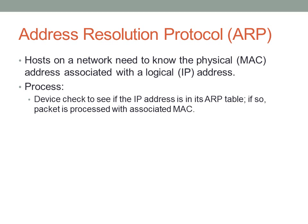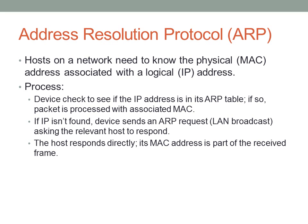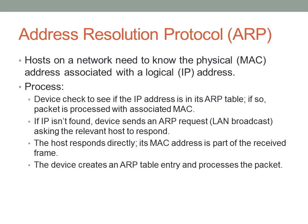Here's how ARP works. First the device checks to see if the IP address is already in its ARP table, which stores mappings from IP address to MAC address. If it's already there, the packet can just be processed and sent out as a frame with that MAC address. If the IP address is not in the ARP table, the device sends an ARP request on the LAN asking who has this IP address. The ARP request is sent as a broadcast to all hosts, but the ARP reply is sent as a unicast back to the requesting host. The mapping is then created and the packet is turned into a frame and sent out.